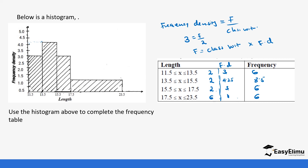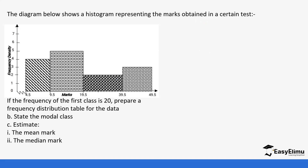I hope you have been able to understand what we have done — use the formula: frequency equals class width times frequency density. Let's look at another question. The diagram below shows a histogram representing the marks obtained in a certain test. Once again we are using frequency density, which tells you the class intervals are not uniform, as you can also see from the histogram — the bars are not the same size.